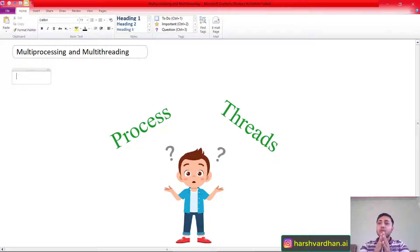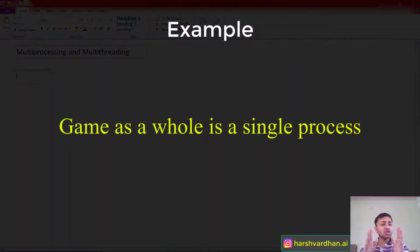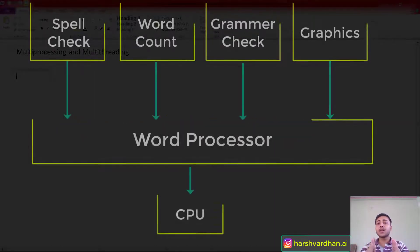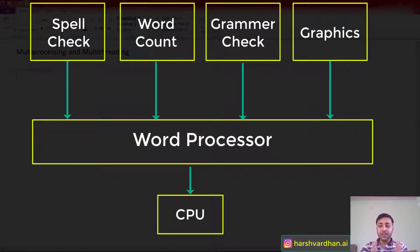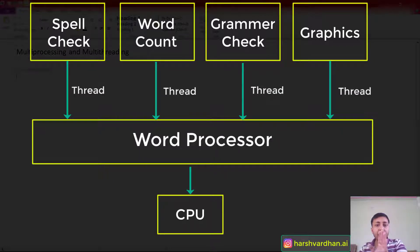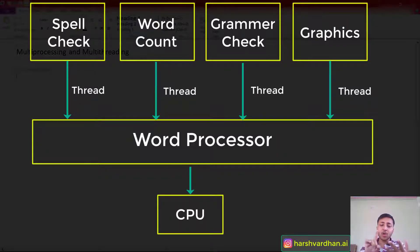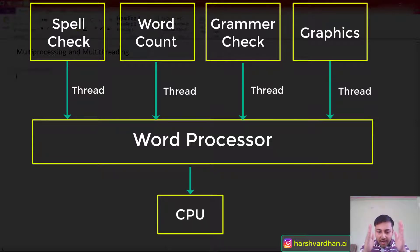You can understand a process as a software. Let's take an example of Microsoft Word — the whole Microsoft Word application is a process, whereas its functionalities are different threads. For example, in Microsoft Word you have spell check, word count, grammar check, and graphics options. These are four different threads, and Microsoft Word as a whole is a process.